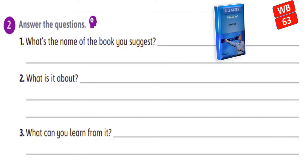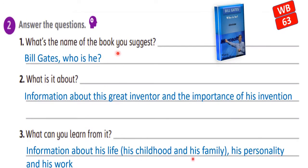Open your workbook on page 63, Activity 2. Let's answer the questions: What is the name of the book you suggest? The title — Bill Gates. What is it about? Number three, what can you learn from it? Let's see the answer. The book is Bill Gates, Who Is He? It's about information about his great inventions and the importance of his invention. You can learn information about his life, his childhood and his family, his personality and his work.